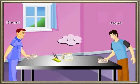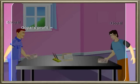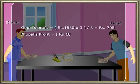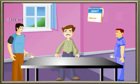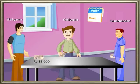The period of investment is the same, so the profit is divided in the ratio of their investments. The ratio in which the profit is to be divided is 3 is to 5. The total profit is rupees 1880. Gopal's profit would be 1880 into 3 divided by 8, which is equal to rupees 705. Bhopal's profit would be 1880 into 5 divided by 8.